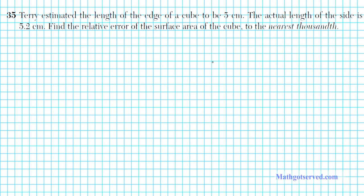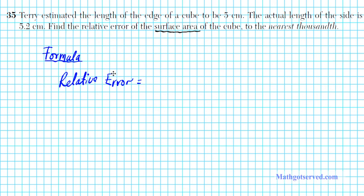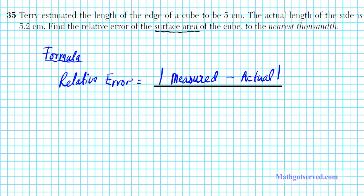We have to be careful here to note that we're not looking for the relative error of the measure of the side of the cube, but we're looking for the relative error of the measure of the surface area. Before we calculate that result, let's go over the formula first. The formula for computing the relative error: relative error is the absolute value of the measured minus the actual, divided by the actual.